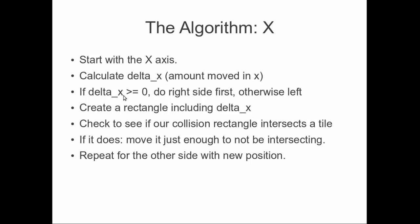We check if delta X is greater than or equal to zero — if so, we do the right side first; otherwise the left. We create a rectangle including delta X: moving right means we extend the width by delta X. Then we check if our collision rectangle intersects a solid wall tile. If it does, we move it just enough to not be intersecting, then repeat for the other side with the new position.